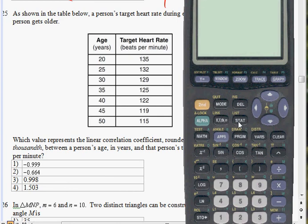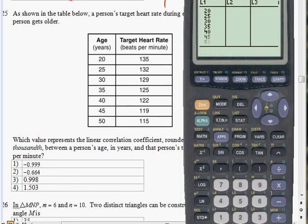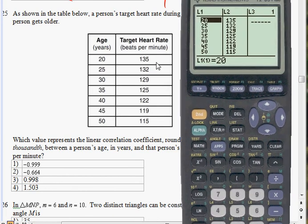You're going to click on STAT over here. Click on that, open the menu. And we're going to click on EDIT. It's number one. And you're going to enter all this information down, column one, L1. You just type all the age down. I already pre-typed it at 20, ordered it down to 50. And also the second column, which resembles target heartbeats, just 135, ordered it down to 115. This is where you're going to store your data, your table over here of heartbeats per age.